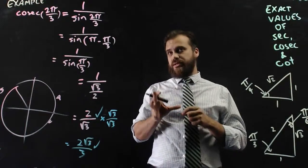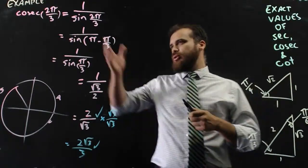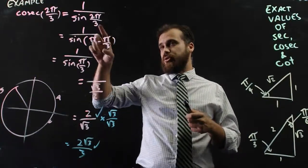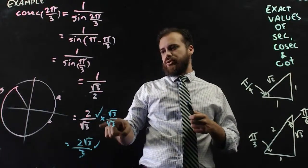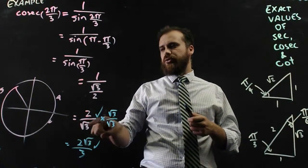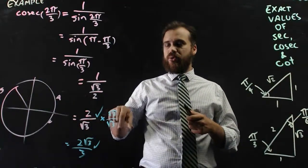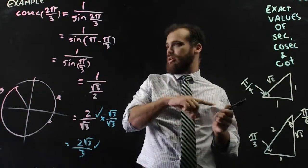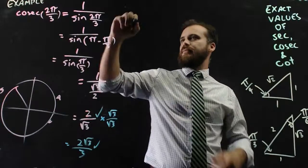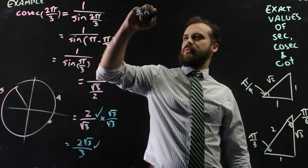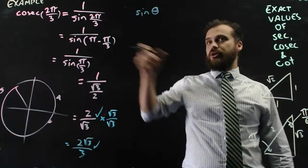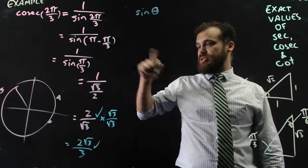It's worth noting at this point as well that if you already knew what sine π/3 was, or if you already knew what sine 2π/3 was, you can immediately jump to 2 on √3. It's always going to be the reciprocal of whatever the sine was.